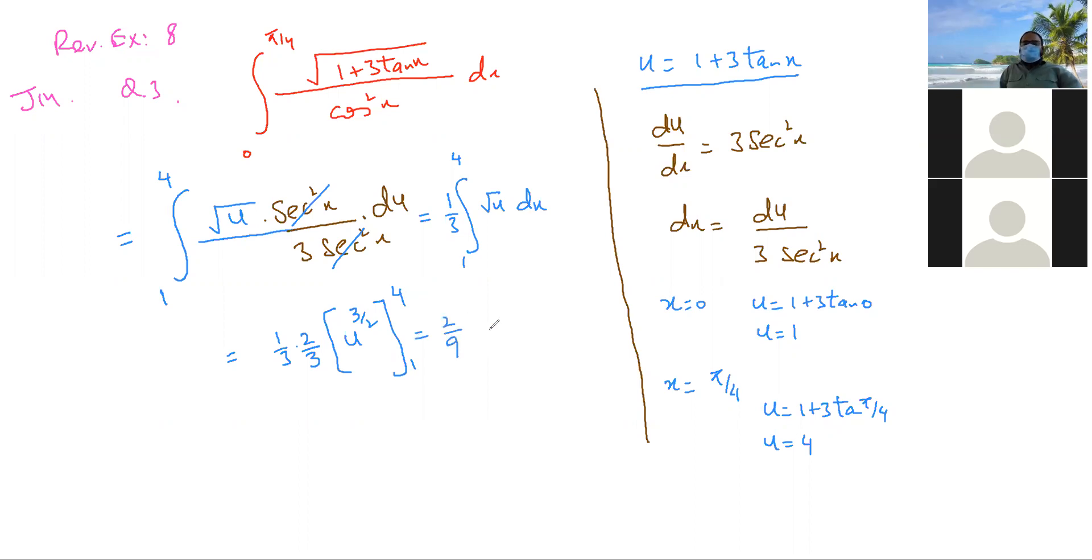So we have 2 by 9, and this is 4 raised to the power 3 by 2 minus 1 raised to the power 3 by 2. So this is 2 by 9 into 8 minus 1, that is 7. Is that right? This is 1 whole 5 over 9 units.